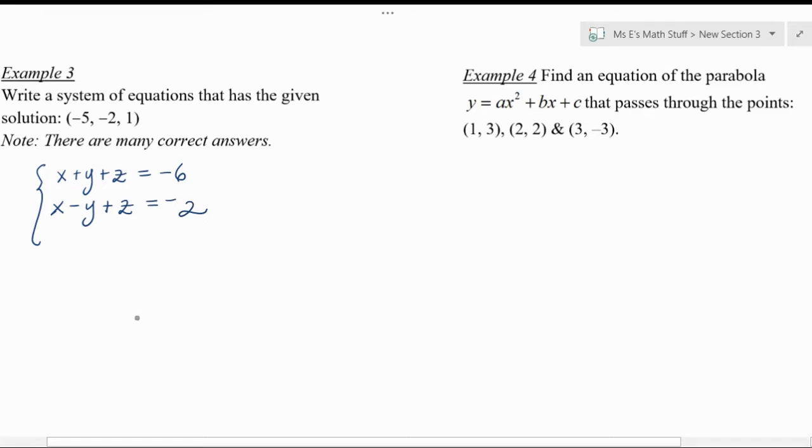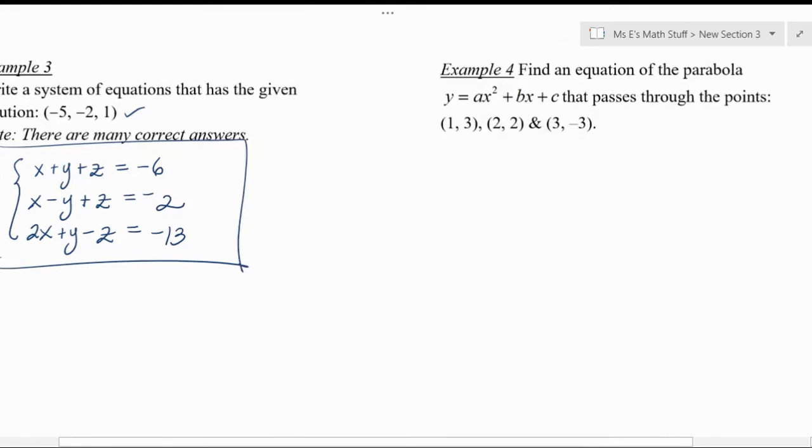So notice I'm just making up combinations of x, y, and z, and then I plug the numbers in to figure out what the constant term would have to be. That's all you do. So let's say, last one, let's have it be 2x plus y maybe minus z, something like that. Okay, so that would be negative 10 minus 2 minus 1, so negative 13. There we go. And then I've got a system of equations where if you solve it you'd get a single solution and it would be negative 5, negative 2, 1.